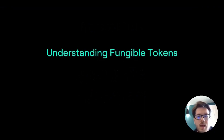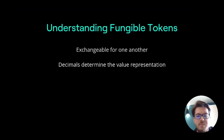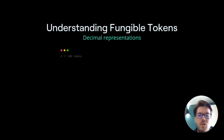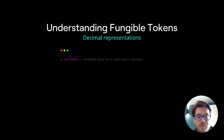Fungible tokens are a type of ESDT that can be exchanged for one another as they have equal value. These tokens have a specific property called the number of decimals, which determines how many decimal points a token can have. For instance, if a fungible token has 6 decimals, the value of 100 units will be represented as 100 times 10 to the power of 6, displayed as 100 followed by 6 zeros after the decimal point.